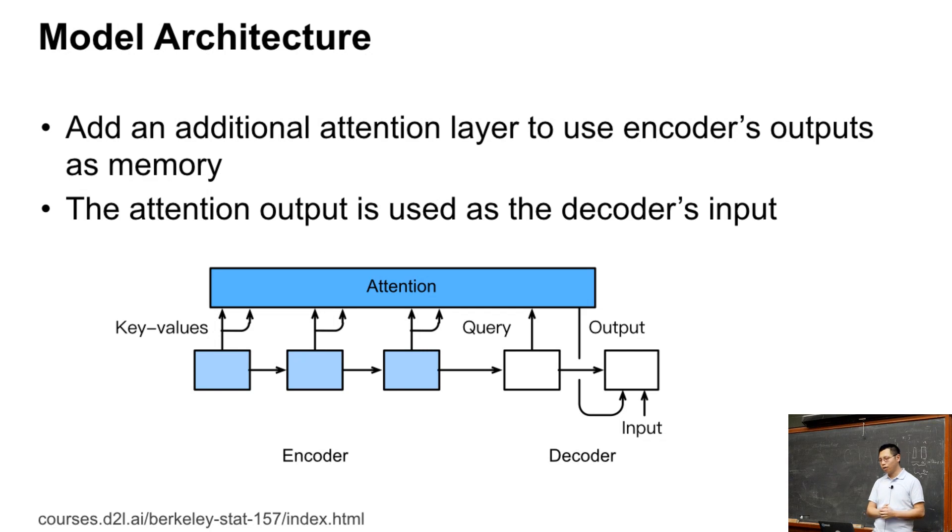Okay, so that is how we can apply attention to sequence to sequence. Question? Where did the key value pairs come from? Did they come from earlier encoder's outputs or something related to that? Yes, the key value pairs is the last recurrent layer of the encoder. We will show that in a minute.